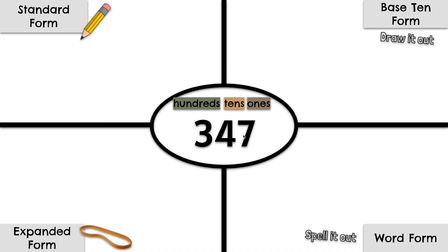347. The 7 is in the 1's place, the 4 is in the 10's place, the 3 is in the 100's place. Let's show 347 in standard form — that means we will simply write it down.